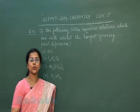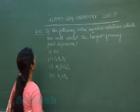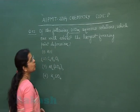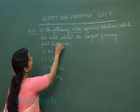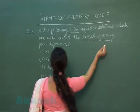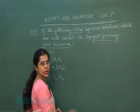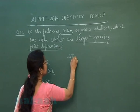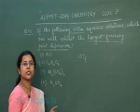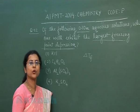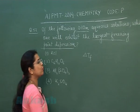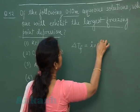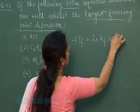The next question is question number 52. Of the following 0.1 molal aqueous solutions, which one will exhibit the largest freezing point depression? As we know, freezing point depression ΔTf is a colligative property, and ΔTf equals i × Kf × molality.